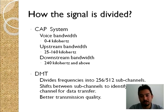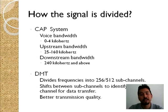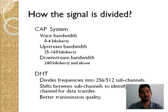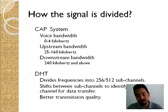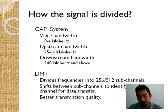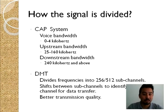DMT, unlike the CAP system, divides signals into a total of 256 or 512 sub-channels depending on the type of ADSL technology used. It is essentially like having 256 separate independent connections between your modem and the DSLAM instead of just a single one, with all 256 connections working simultaneously. This creates regular sifting of sub-channels to identify the best channel for transmission and turns off unused sub-channels, giving DMT faster speed and better transmission quality than CAP — which is why it remains the industry de facto standard.